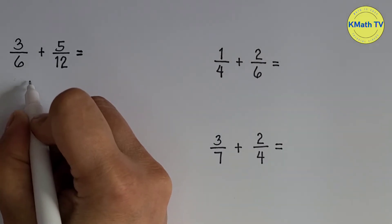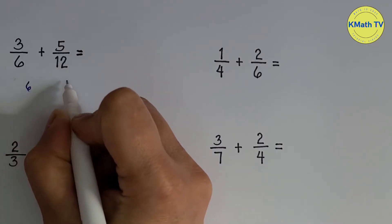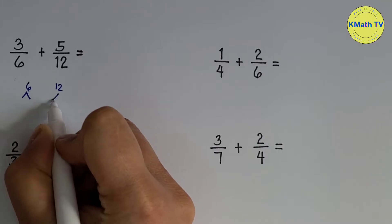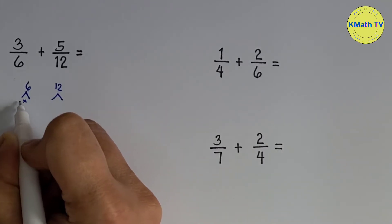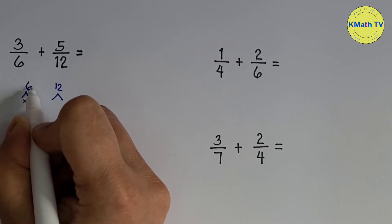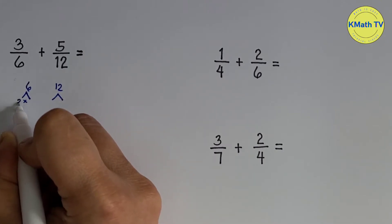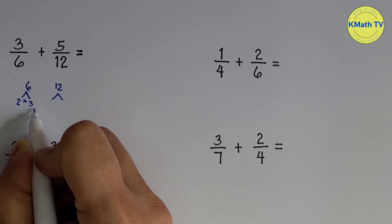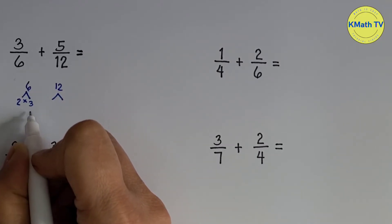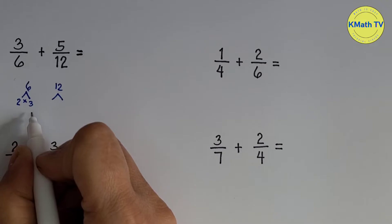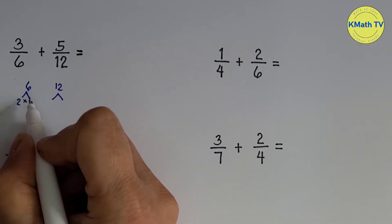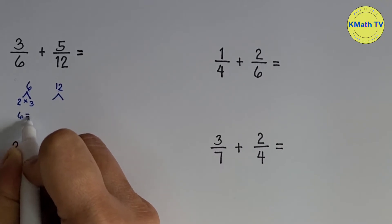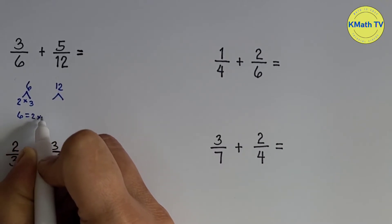Let's write the denominators: 6 and 12. What are the numbers that if we multiply, the product is 6? That's 2 and 3 — 2 times 3 equals 6. 2 and 3 are prime numbers, so these are the prime factors of 6. We write: 6 equals 2 times 3.